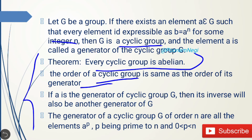This is a very important theorem related to the generator of a cyclic group, as it says there may be more than one generator for any group. With the help of this, we can find that all elements aᵖ where p is relatively prime to n will be generators of that group.